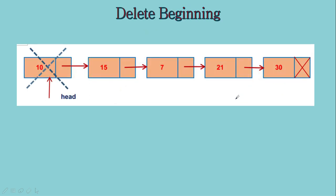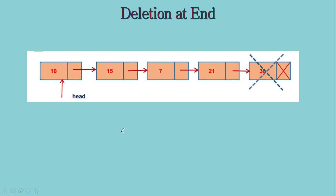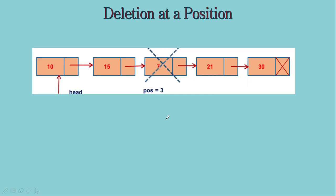Next is delete at beginning. In delete at beginning, we will be removing the first node in the linked list. It doesn't depend on the number of nodes, so it's big O of 1. Delete at the end: we definitely have to move to the last but one node and then perform the deletion, so the complexity will be big O of N.